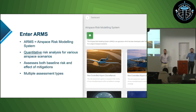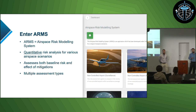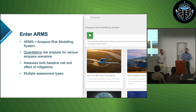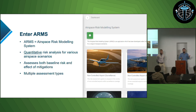One of CASA's responsibilities is to assess the impact of proposed changes to airspace — things like changing routes which aircraft fly on, or services which are available to pilots. Prior to ARMS, assessments of these types of changes were qualitative in nature and usually depended on the expertise of aviation safety experts. ARMS introduced quantitative data analysis to these types of assessments.